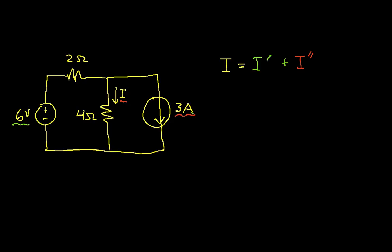So with that introduction, let's actually try to solve this circuit. What we would like to know is the value for I. The first thing we need to do to apply superposition is choose one independent source. We'll choose the 6-volt source, and then everything else goes away. To make a current source go away, we just basically cut it out and leave an open circuit.